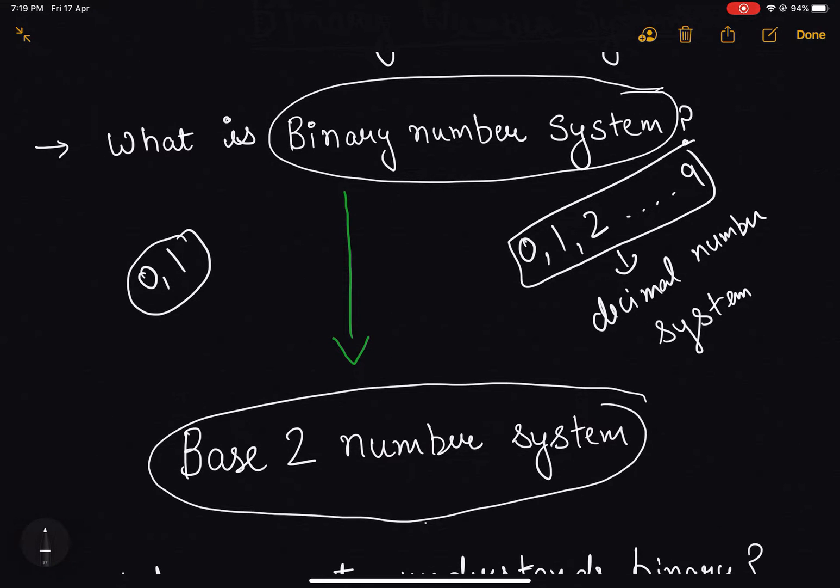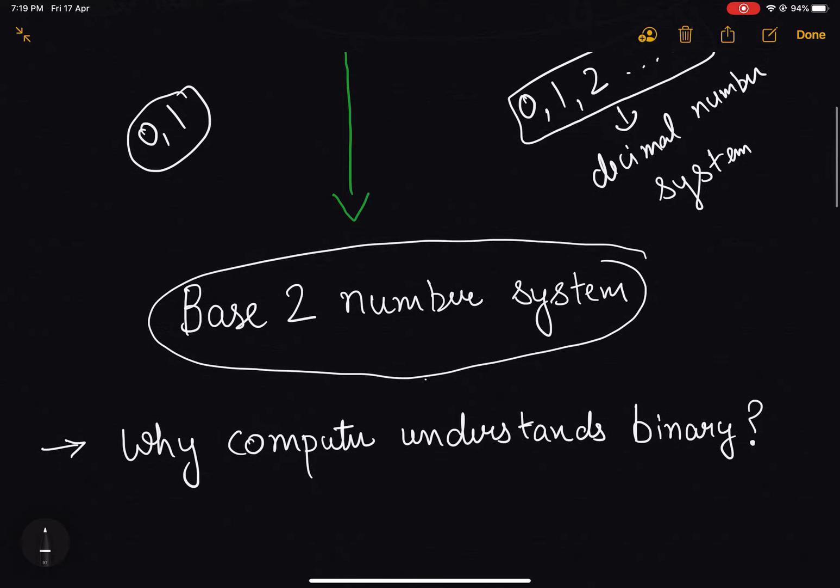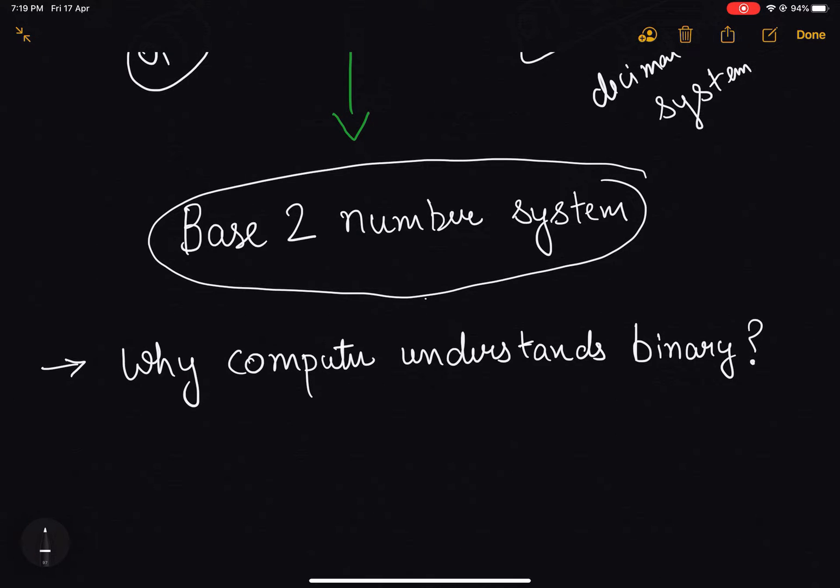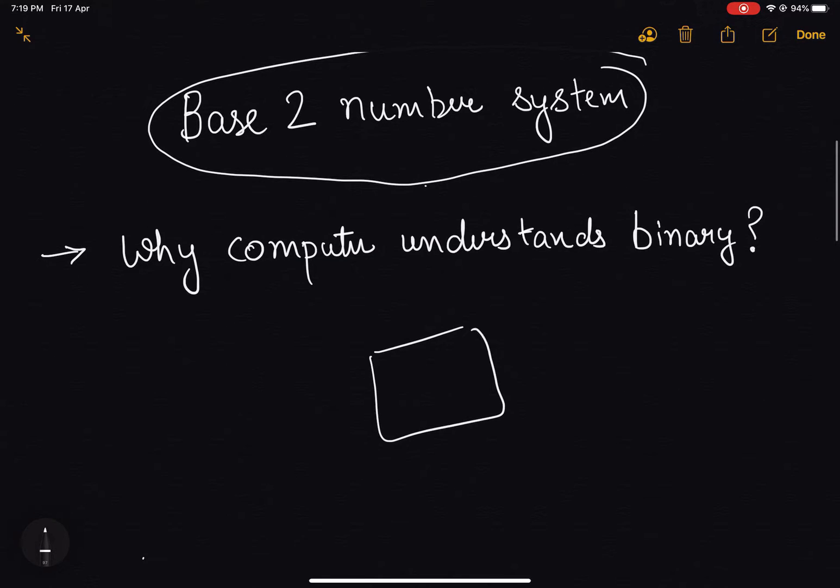Now the question is why computer understands binary? The simplest explanation can be that a computer is an electrical device and all electrical devices understand electrical signals. If we have an input wire to this machine, there are only two states possible for this wire.